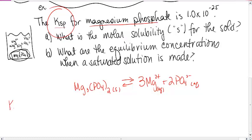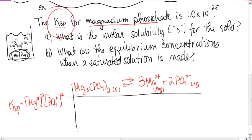Great. Then I can write my KSP expression. This is just the KEQ, so magnesium ion cubed times phosphate ion squared over 1, but I don't need to write that. And then I can do an ice table, which I'll just write it here.